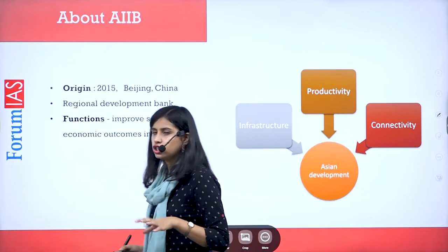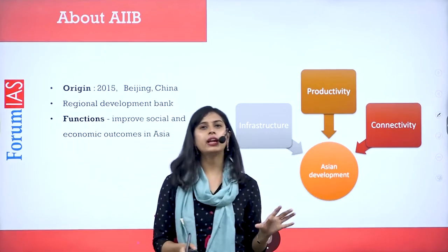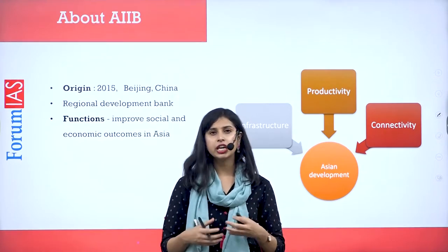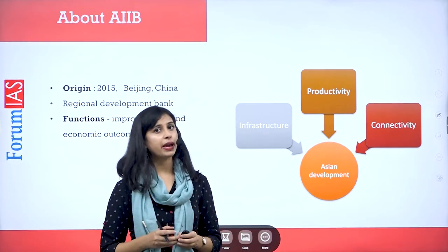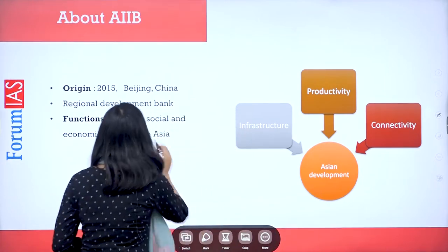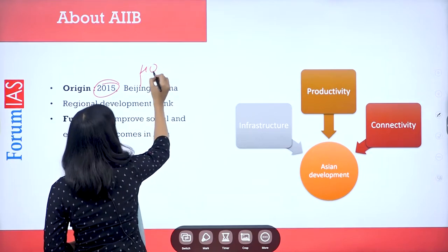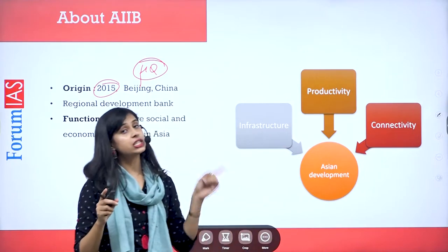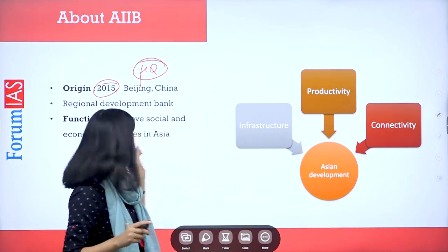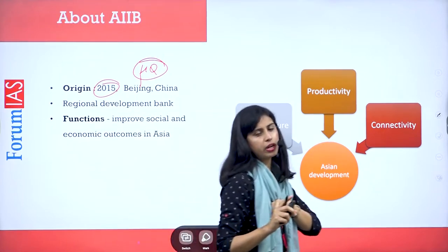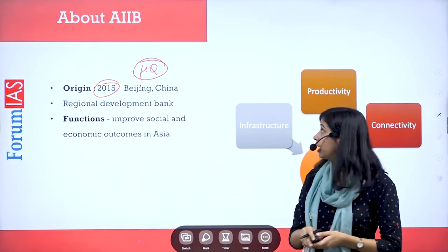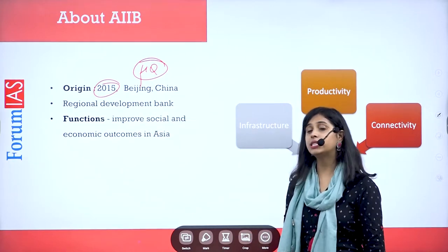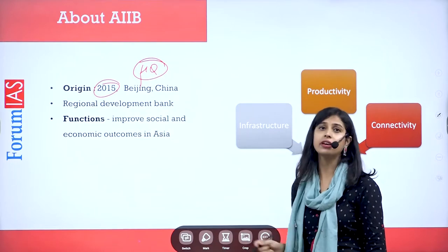AIIB was formed to counter Western organizations like the World Bank and IMF. Mostly this was China's initiative. The Asian Infrastructure Investment Bank was established in 2015 and its headquarters is in Beijing, China. You should be aware of the Asian Development Bank, which was formed in the 1960s and has its headquarters in Manila, Philippines. AIIB's main purpose is regional development, specifically Asia-Pacific development.